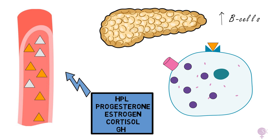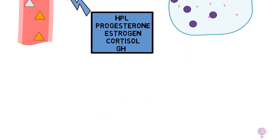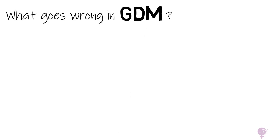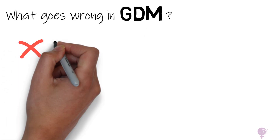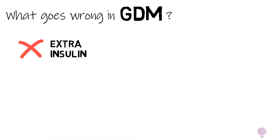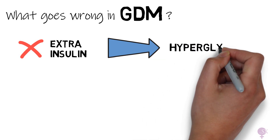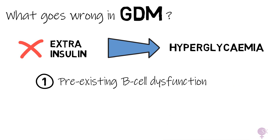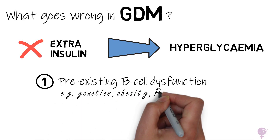This is what happens in a normal pregnancy. Now, what's going on in gestational diabetes? Essentially, this natural adaptation fails — we do not have extra insulin being produced as a compensatory mechanism, which results in hyperglycemia in these women. This is essentially happening because of pre-existing beta cell dysfunction, meaning the pancreas is weaker and not producing enough insulin. This could be secondary to genetics, obesity, or PCOS for example.